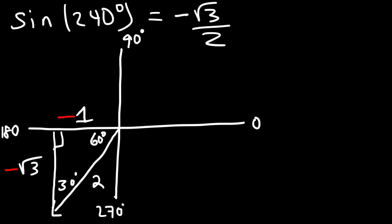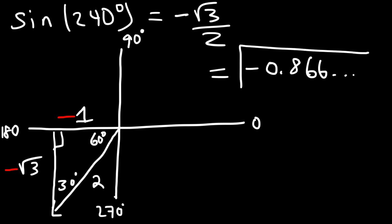You can check this with a calculator in degree mode. Sine of 240° should equal −√3/2, which as a decimal is approximately −0.866.